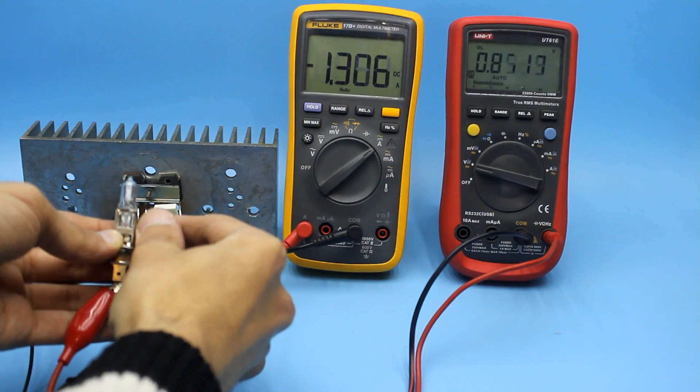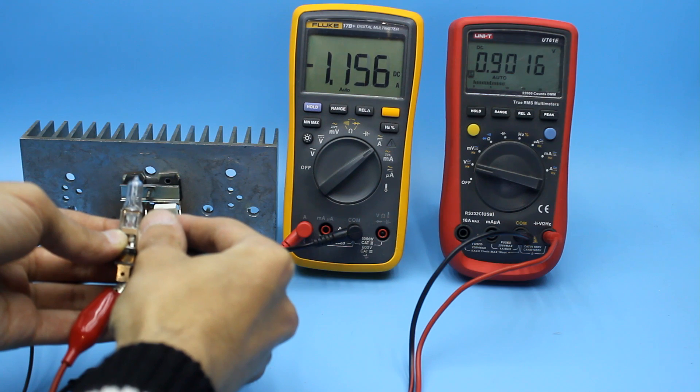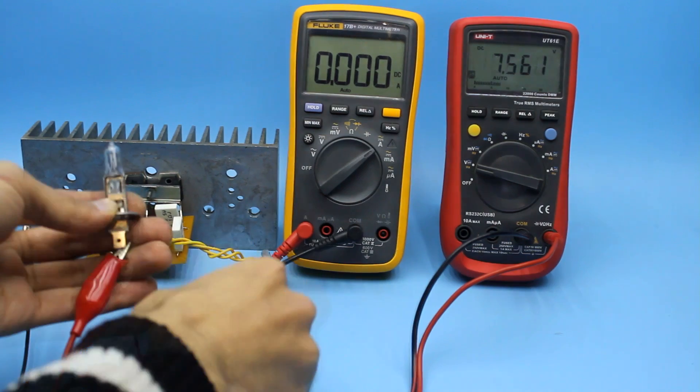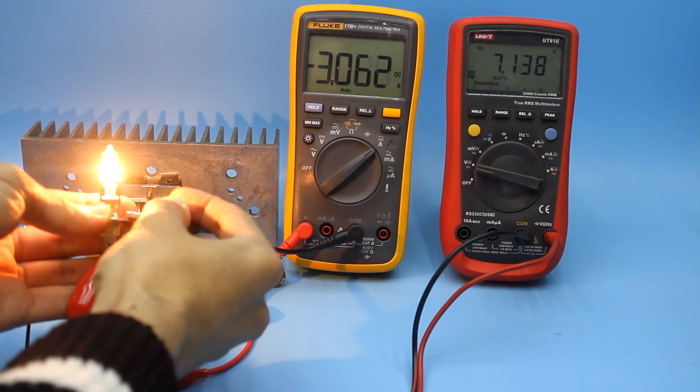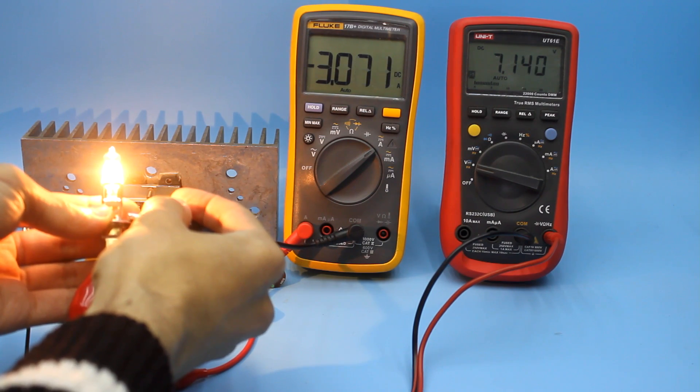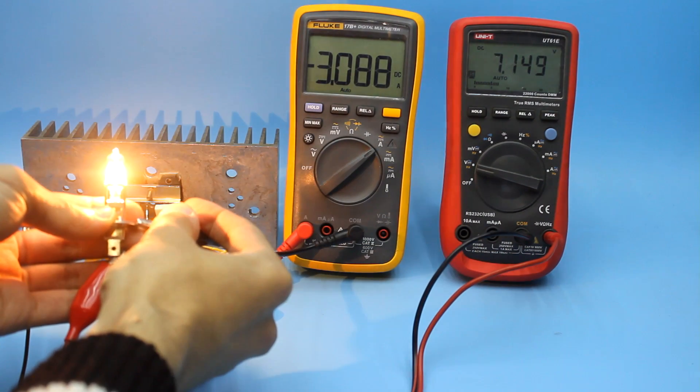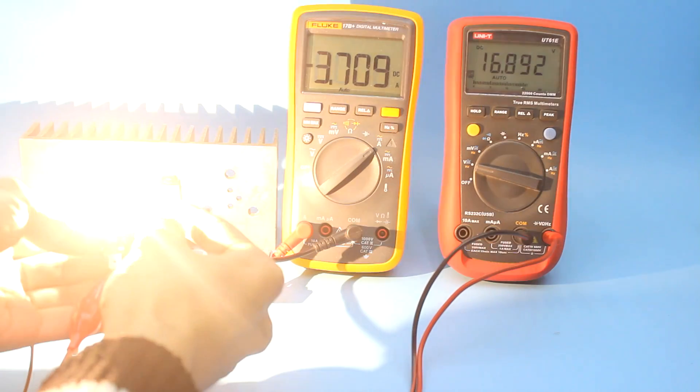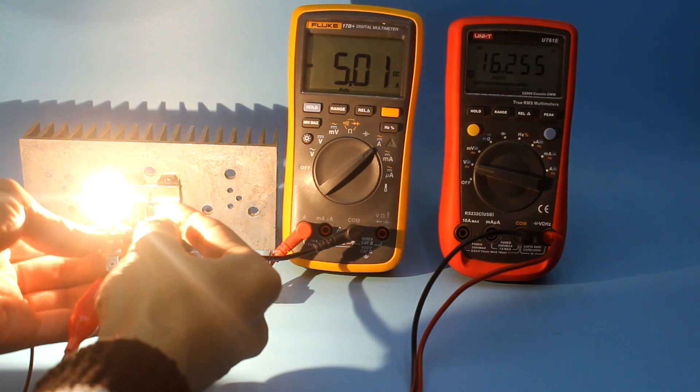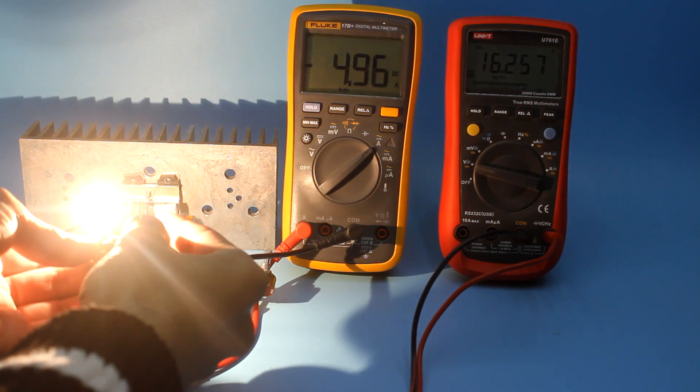Current is 1 ampere. Drawdown is about 0.1 volts. Current is 3 amperes. Drawdown is 0.4 volts. And finally, a maximum current of 5 amperes, a drop of 0.65 volts. I repeat, without measuring equipment, these values would be much smaller.